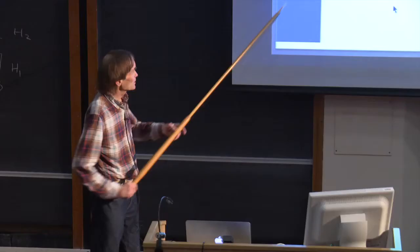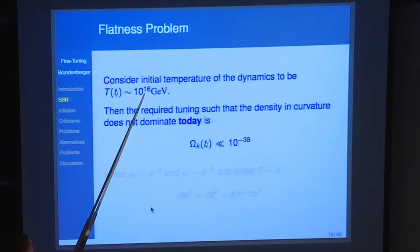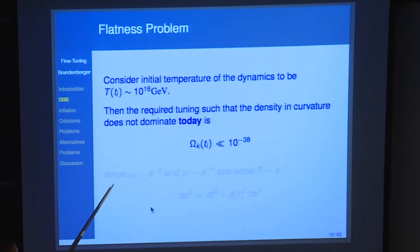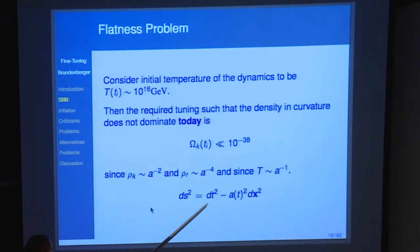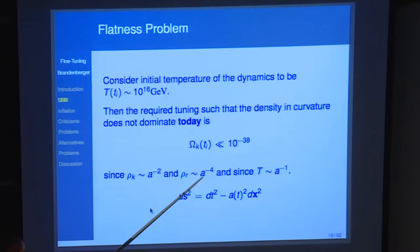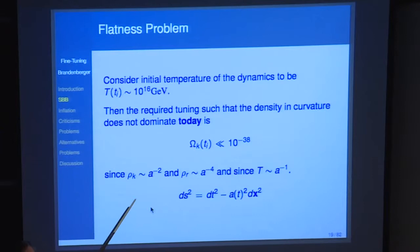What about spatial flatness? If we assume initial conditions are set when the temperature of the universe was 10 to the 16 GeV — the scale of grand unification, a couple of orders of magnitude below the Planck scale — then the energy density in spatial curvature decreases as the scale factor to the minus 2, but the energy density in radiation goes as the scale factor to the minus 4. So if you want the energy density in spatial curvature to not be dominant today, you need it to be fine-tuned to extraordinary accuracy at that initial time. A very serious fine-tuning problem.